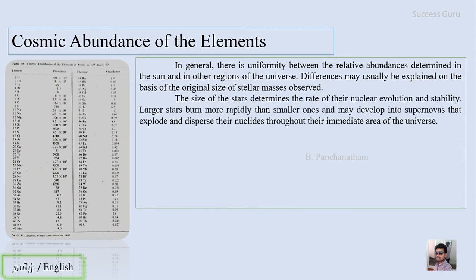In general, there is uniformity between the relative abundances determined in the sun and in other regions of the universe. The differences may usually be explained on the basis of the original size of the stellar masses observed.